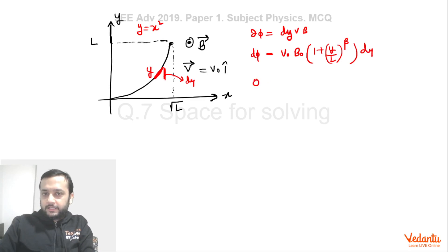So if we integrate this whole function, we can integrate y from 0 to L. So this will become v₀B₀, 1 dy will become y and this y by L, L is constant it will come out of integration sign. y to the power β will become y to the power β+1 divided by β+1.